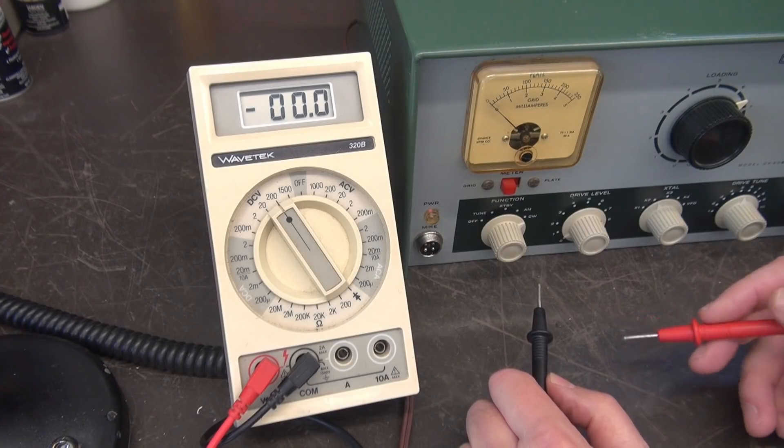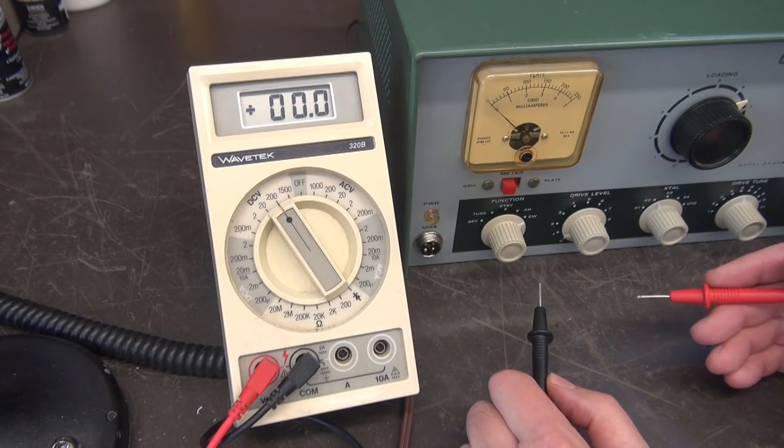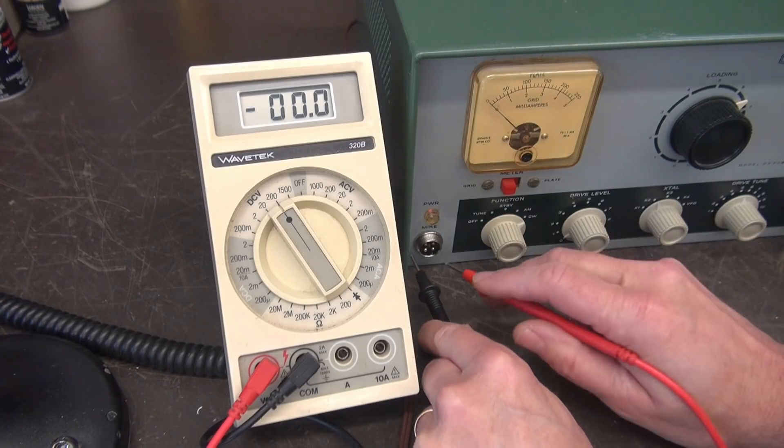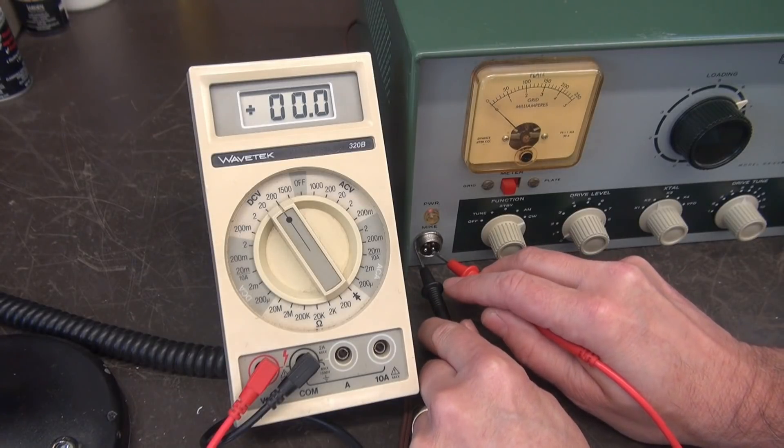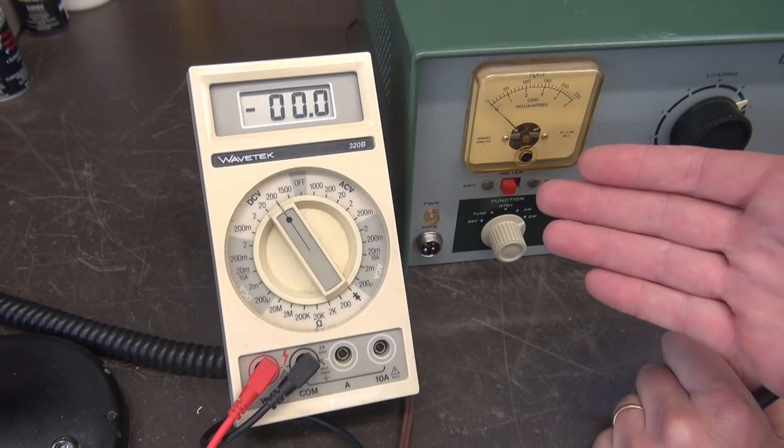For those of you that are wondering what kind of voltage is going into my microphone when I'm keying up this radio, because I'm sure you've read the horror stories of some radios putting several hundred volts into your microphone contacts, here is the resting voltage: a little over 16 volts. And of course when you key the mic that goes to zero.